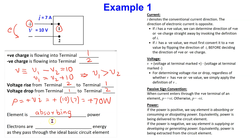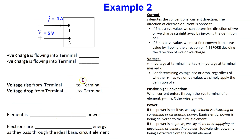When the element is absorbing power, electrons are losing energy as they pass through the ideal basic circuit element. Let us consider the next example. The ideal basic circuit element is given where voltage is positive but current is negative. The voltage polarity and current direction are as marked.